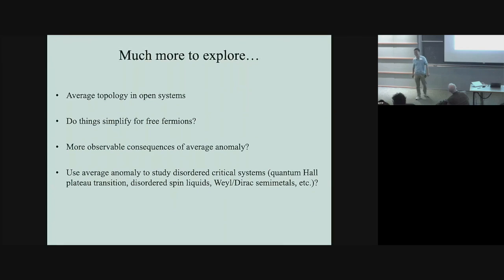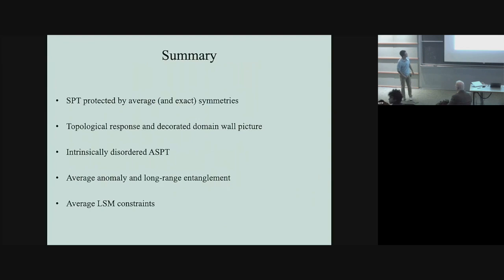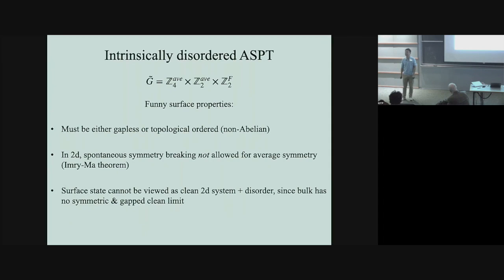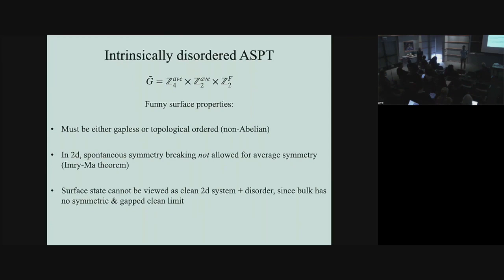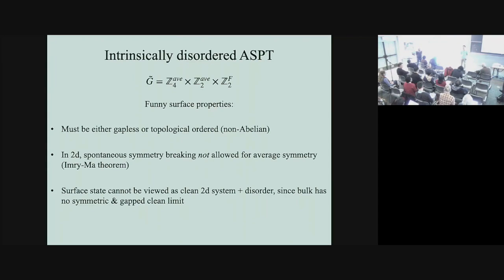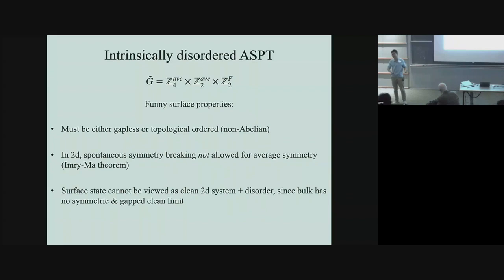Thanks for the great talk. At the end you mentioned the surface of the intrinsic SPT state — you say it must be either gapless or topological. If it's topological, what would be the signatures to detect this topological surface state? Because apparently this would be some sort of averaged topological order state. The simplest one is that every state has that topological order — each different disorder realization is adiabatically connected and they just have the same topological order. It's just like fractional quantum Hall. But on average, like when an experiment is just measuring each disorder realization, it will be... typically you only have one shot, one sample, but large enough this thing should work out.